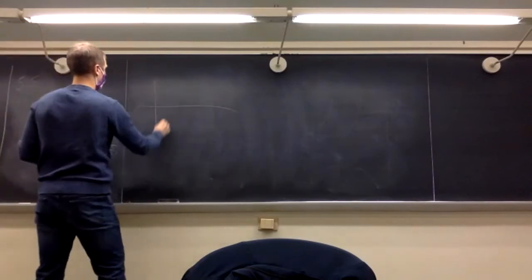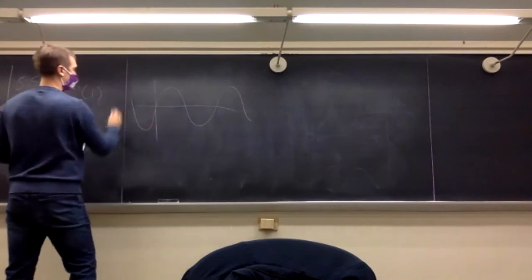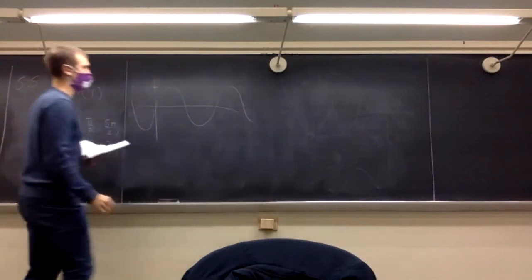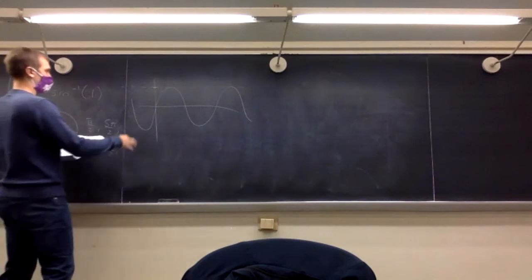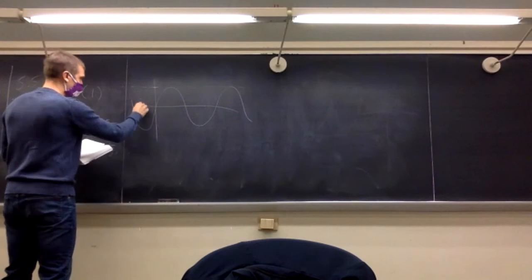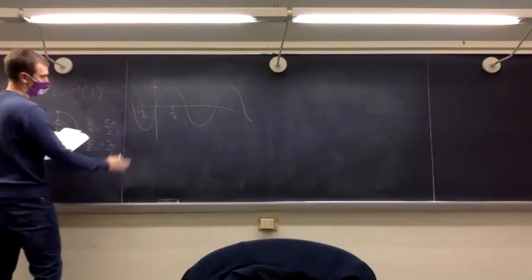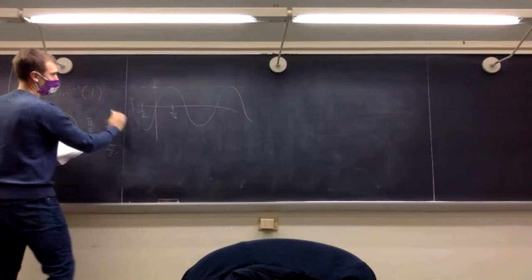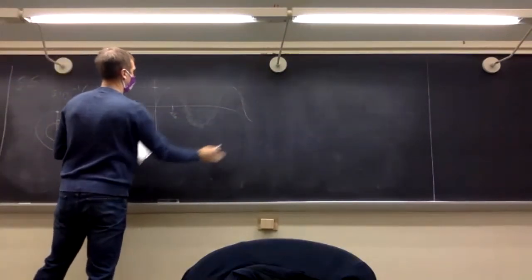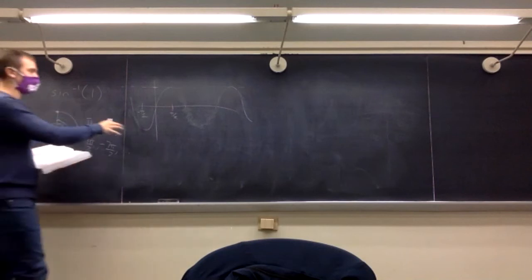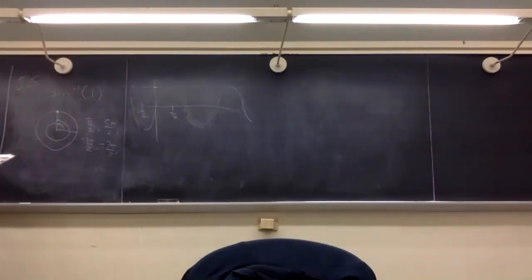We look at the sine function — it looks like a wave. If we ask what angle gives a certain height, we get infinitely many answers. So to make this a one-to-one function, we restrict the domain to negative pi over 2 to pi over 2. Within that interval it passes the horizontal line test, so it's invertible. But this is a choice — a convention.